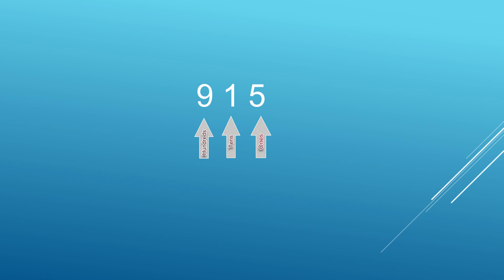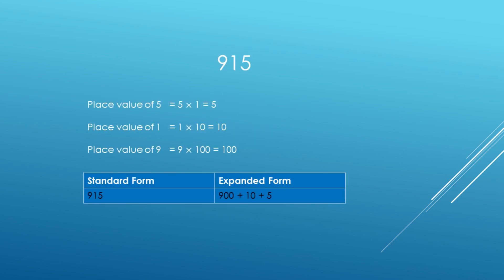For example, we will consider a three-digit number, 950. Here, 5 is in the 1's place, 1 is in the 10's place, and 9 is in the 100's place. So the place value of 5 is 5 × 1 = 5, the place value of 1 is 1 × 10 = 10, and the place value of 9 is 9 × 100 = 900. The expanded form of 915 is 900 + 10 + 5.